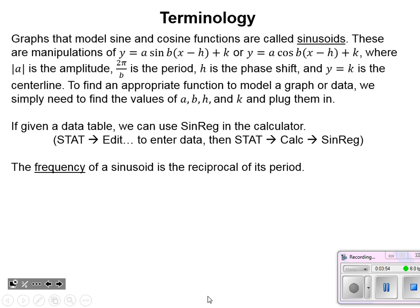What if our data only kind of resembles a sinusoidal function and we're not given a perfect graph? Just like we did linear, quadratic, and exponential regression, there is also a sine regression that will output a best-fit sine function for any set of data points we enter. The steps to reach that calculator menu are listed in parentheses. One last new vocabulary word: the frequency of a sinusoidal graph is simply the reciprocal of the period — one over the period.